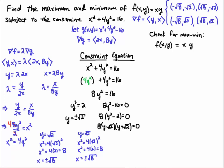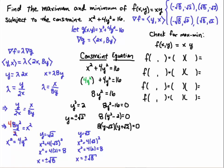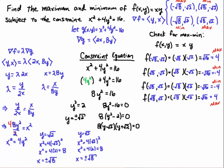Now we check for max and min by plugging all four points into the original function f(x,y) = x times y. For (minus root 8, minus root 2): minus times minus gives plus, and root 8 times root 2 = root 16 = 4. For (plus root 8, minus root 2): one negative sign gives negative root 16 = negative 4. For (minus root 8, plus root 2): one negative sign gives negative root 16 = negative 4. For (plus root 8, plus root 2): both positive, so root 16 = 4.